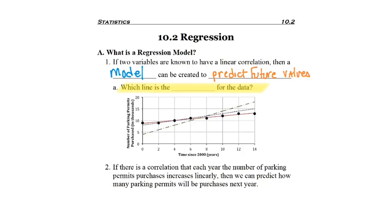Up above, we're asked which line is the best fit for the data. In this graph, these black dots represent each year since 2000. For example,